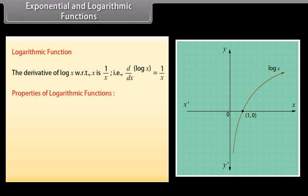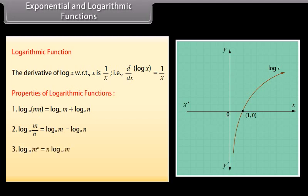Properties of logarithmic functions: 1. logₐ(mn) = logₐm + logₐn; 2. logₐ(m/n) = logₐm − logₐn; 3. logₐ(mⁿ) = n·logₐm; 4. logₐm = log_b(m) · logₐ(b).